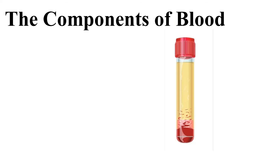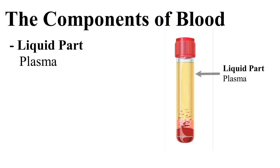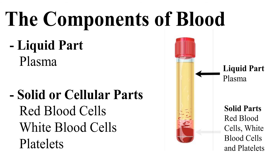The components of blood include the liquid part known as plasma, and the solid or cellular parts: the red blood cells, white blood cells, and platelets.